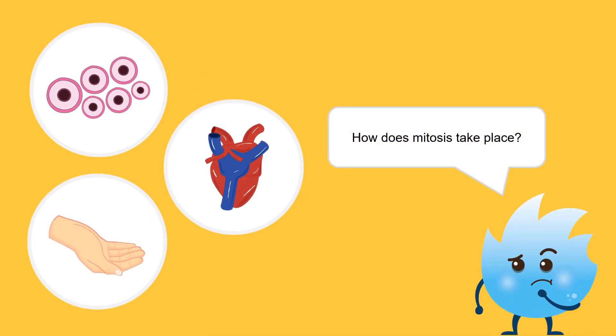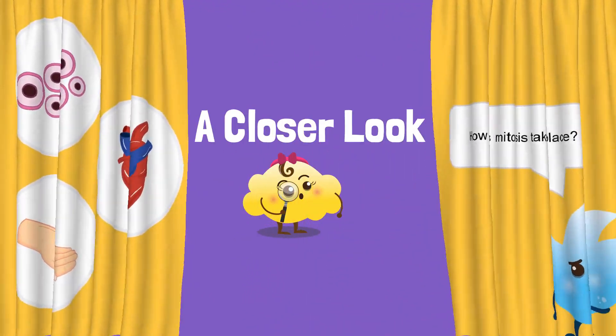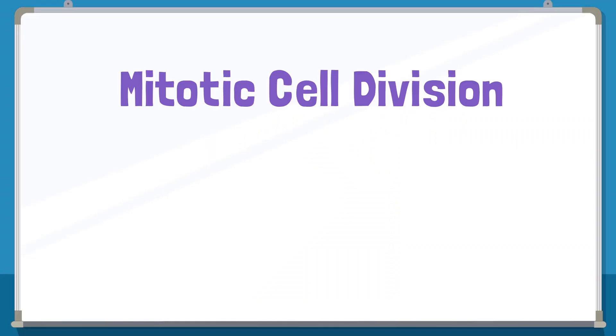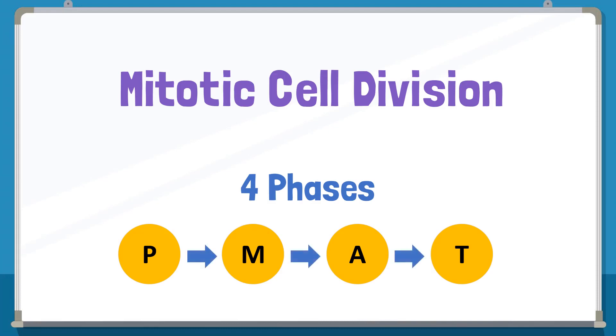But how does mitosis take place? Let's take a closer look at how mitosis takes place. There are four phases of mitotic cell division. You can remember it by the letters P, M, A, T or PMAT. Here P stands for prophase, M for metaphase, A is for anaphase, and T is for telophase.